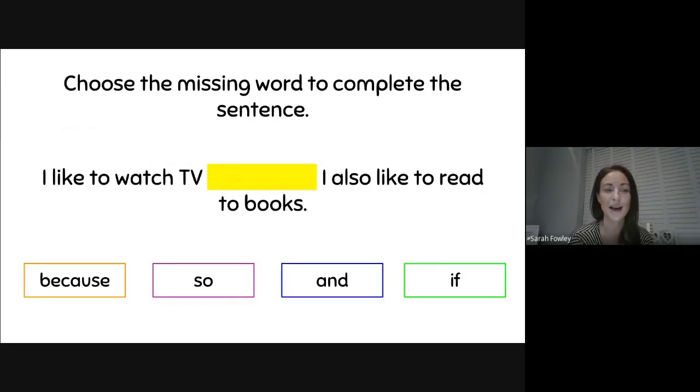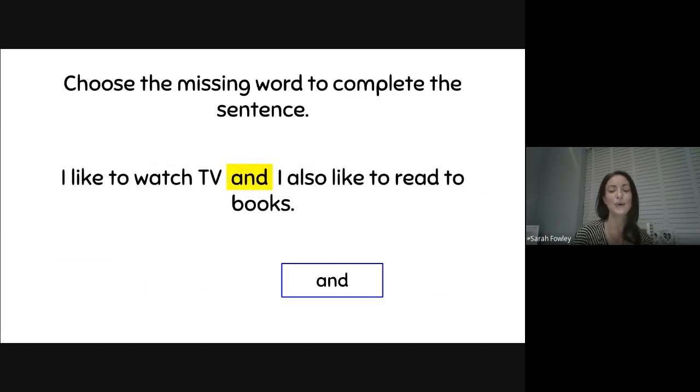Let's see if you can do this one by yourselves. I like to watch TV. I also like to read books. Let's read them together. I like to watch TV because I also like to read books. That doesn't really make sense. I like to watch TV, so I also like to read books. No. I like to watch TV and I also like to read books. That makes sense, but I'm just going to see if the last word is even better. I like to watch TV if I also like to read books. No. The missing word is, of course, and.